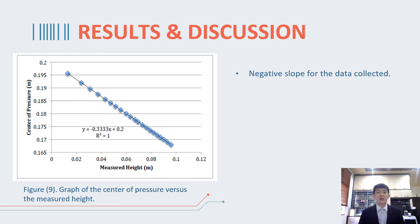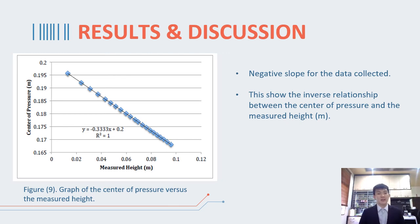This shows a linear relationship between the center of pressure and the measured height for the partially submerged surface. This result is supported by the R-squared value of one. Thus, as height increases in the tank, the center of pressure decreases.